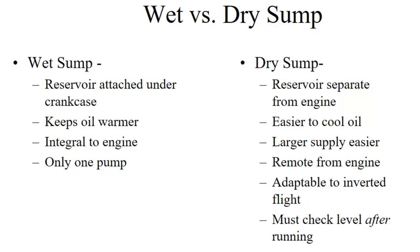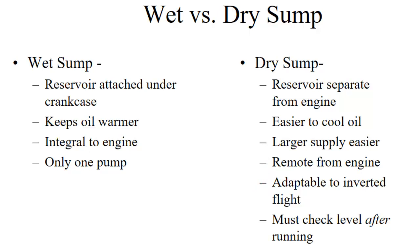On a dry sump, we have a separate reservoir that is easier to cool because it's away from the engine, allowing a larger oil supply. It's remote from the engine and more easily adaptable to inverted flight. However, it has two pumps — a pressure pump and a scavenger pump to take the oil from the bottom of the crankcase back up to the tank — which doubles your chances of a pump failure. And they're not a backup for one another; they serve completely separate purposes and both have to be running.